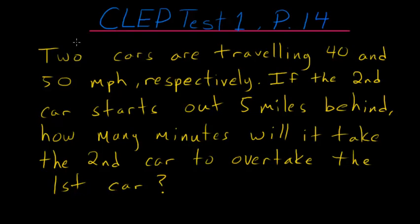In problem 14, two cars are traveling at 40 and 50 miles per hour respectively. If the second car starts out five miles behind, how many minutes will it take the second car to overtake the first car?